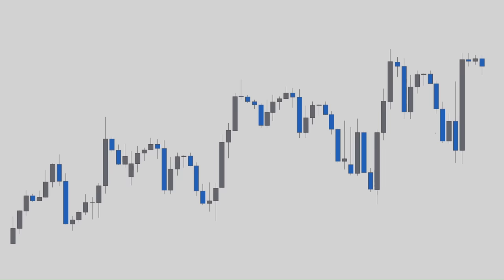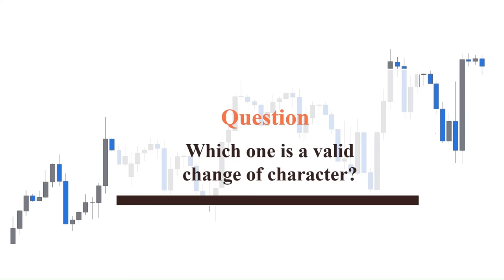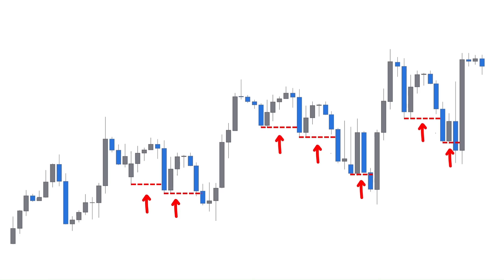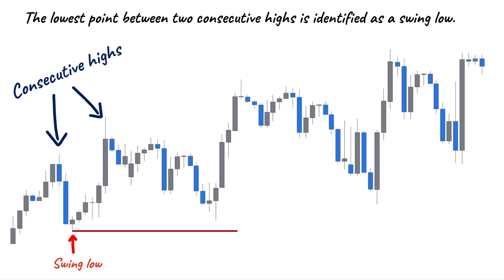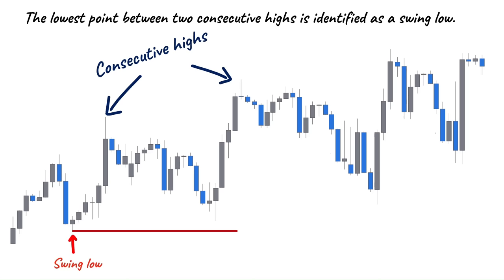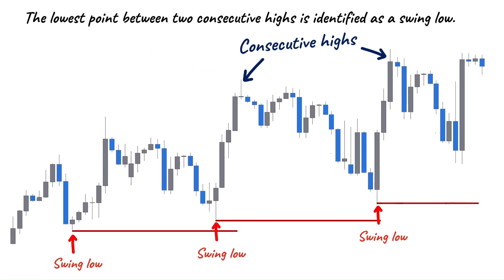But the market barely moves this clearly, so here is the question: which breaks are valid and considered a change of character? To answer this, we must identify our swing lows. In the bullish scenario, the lowest point between two consecutive highs is identified as a swing low. As long as the price stays above this level, it represents a bullish market and we will only look for buying opportunities. For a valid change of character, we need a candle that breaks and closes below that swing low. Keep in mind that the same concept applies to the bearish scenario.